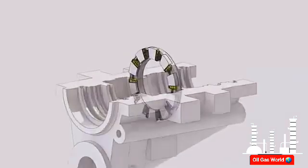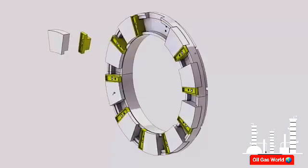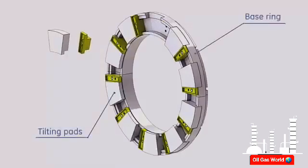The inactive thrust bearing is a tilting pad non-equalizing type bearing. A non-equalizing type bearing is also capable of sustaining high axial loads, but less tolerant of shaft and housing misalignment. This bearing is functionally identical to the active thrust bearing, except that it doesn't have leveling plates. Instead, the tilting pads are directly supported at their back by the base ring.